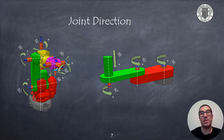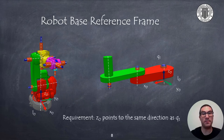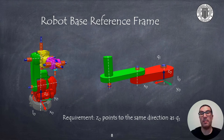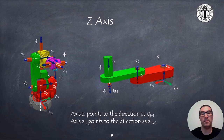If the direction is not known, this generally means that we can freely choose it, which means it is purely arbitrary. The robot base has a reference frame associated with it. The main requirement for this reference frame is that the axis z0 points in the same direction as q1, taking into account the rotation direction of the joint. Axes x0 and y0 can be chosen arbitrarily as long as the system forms a right-handed reference frame. In an industrial robot, the manufacturer will indicate the exact location of such a reference frame. The z-axis of the rest of the reference frames must be placed on the joint axis, bearing in mind that zi points to the direction of qi+1.